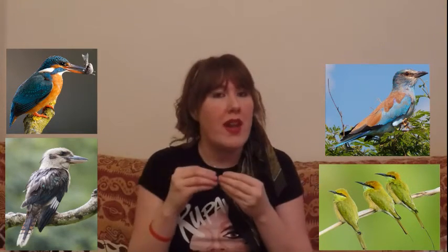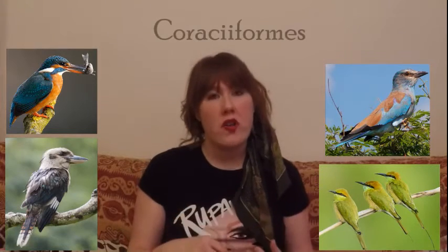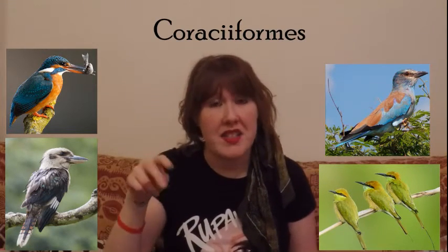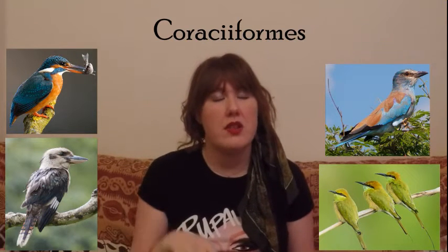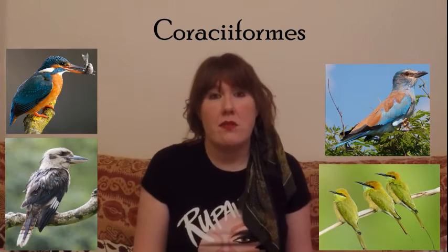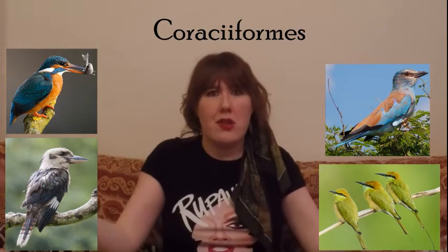Bee-eaters, rollers, kookaburras, kingfishers all come under the next category. These are birds that are often tropical, mostly very colourful, and eat fish and insects. They're normally known as wait-and-see predators — they will wait, not hunt; they'll wait for prey to come across their path. These are called Coraciiformes — spelled with two I's. Remembered by 'of course I see' — 'of course I see forms.' Coraciiformes.